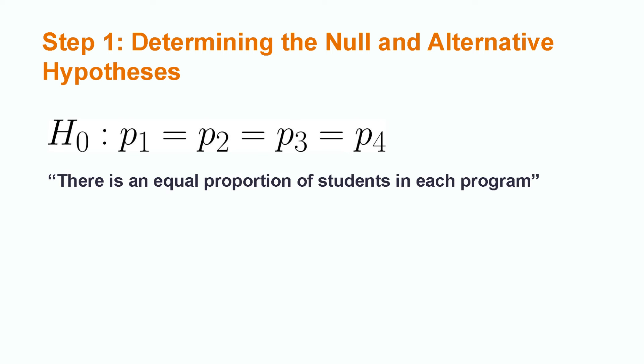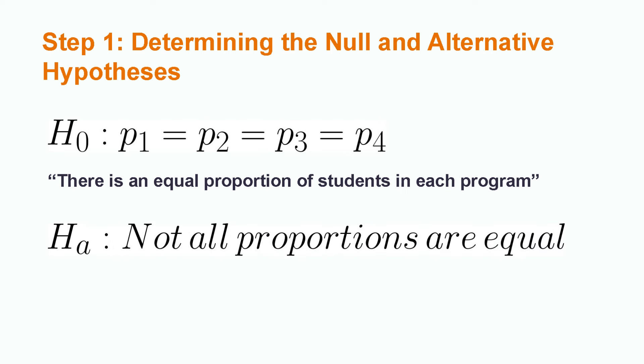In this case, we assume that the proportion of students in each program are equal. In words, the null hypothesis for our community college example would be the proportion of students in four community college programs are equal.